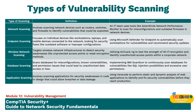There are different kinds of vulnerability scanning: network scan, endpoint scan, wireless scanning, database scanning, and application scanning. Network scanning involves scanning network devices such as routers, switches, and firewalls to identify vulnerabilities. Scanners check open ports, active IP addresses, and services running on servers. This helps administrators understand the security posture and pinpoint weaknesses like unprotected network devices or open ports. An example is using SolarWinds Network Performance Monitor to scan for misconfigurations and outdated firmware.